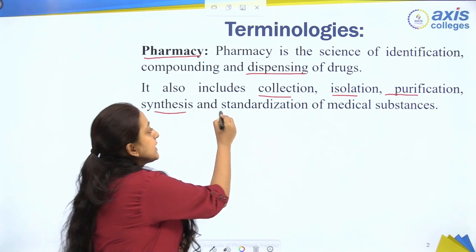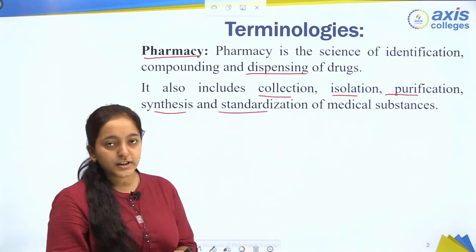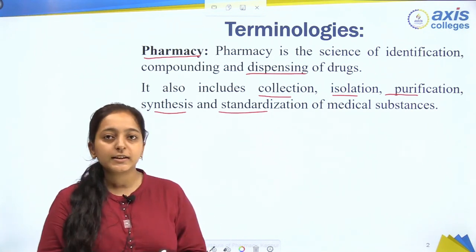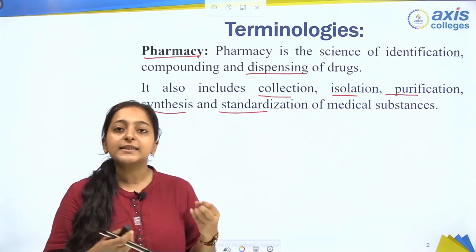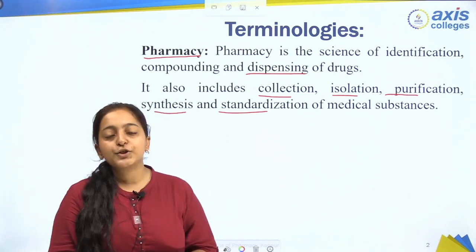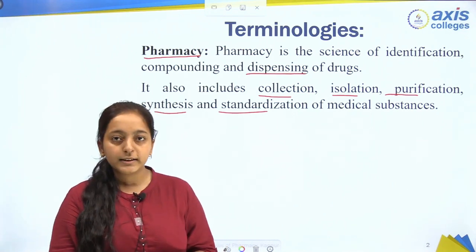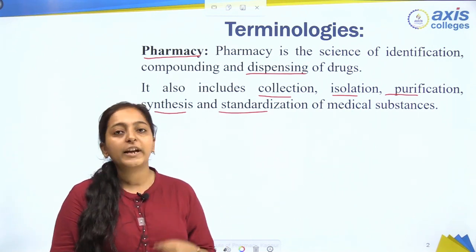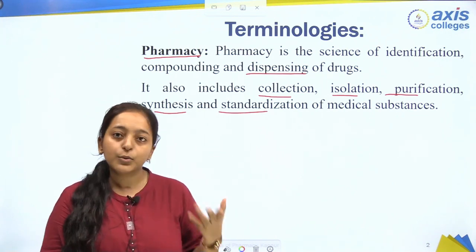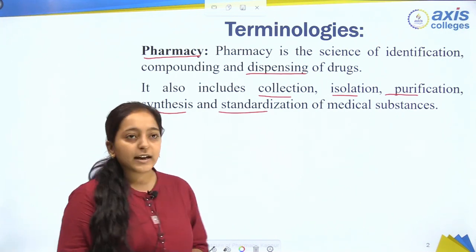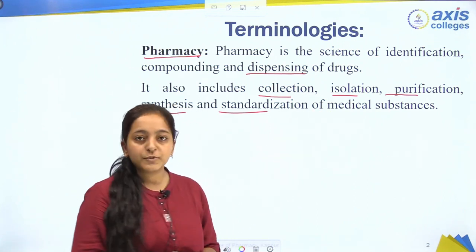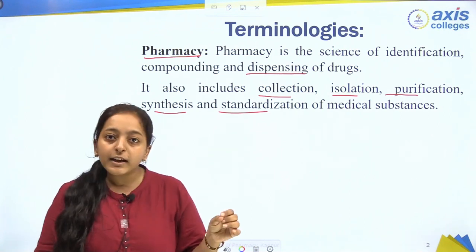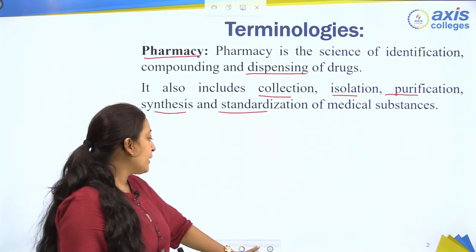Next comes Synthesis and Standardization of Medical Substances. Standardization means, as we have talked about purity, we want our drug to maintain a standard. To identify that standard in medical substances is also part of the pharmacy branch.